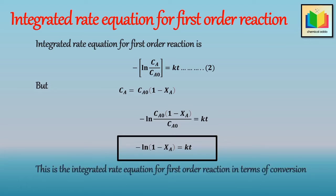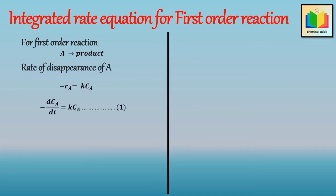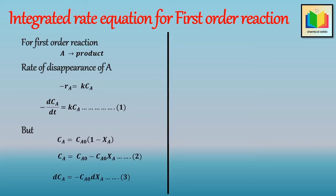Now let's see the second method to derive the integrated rate equation for the first order reaction in terms of conversion. If A gives product is the first order reaction, the rate equation is: minus R_A equals K·C_A, which can be written as minus dC_A/dT equals K·C_A. We know C_A in terms of conversion as C_A equals C_A0·(1 minus X_A), which expands to C_A0 minus C_A0·X_A. Differentiating, we get dC_A equals minus C_A0·dX_A. Substituting the values of C_A and dC_A into equation 1 and rearranging, we get the differential equation in terms of X_A.